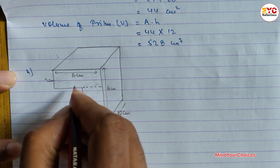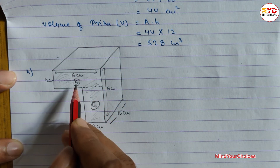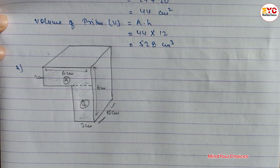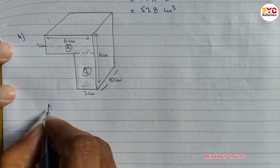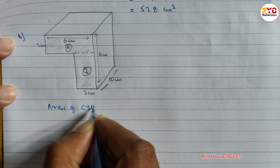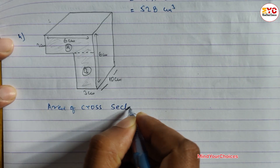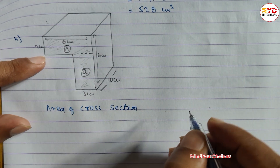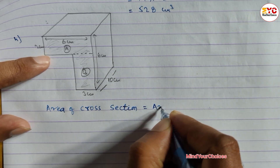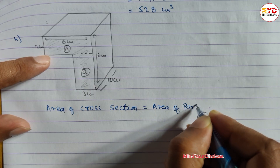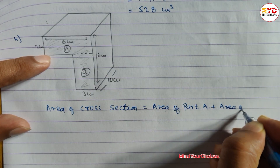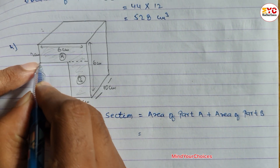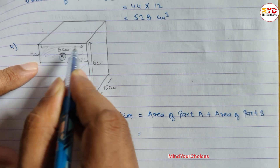Let's divide this into two parts — Part A and Part B. Now we have to find out the area of cross section. Area of cross section equals area of shaded region, which is divided into Part A and Part B. We can write: area of Part A plus area of Part B. Area of Part A: length is 6, breadth is 6, so 6 into breadth.